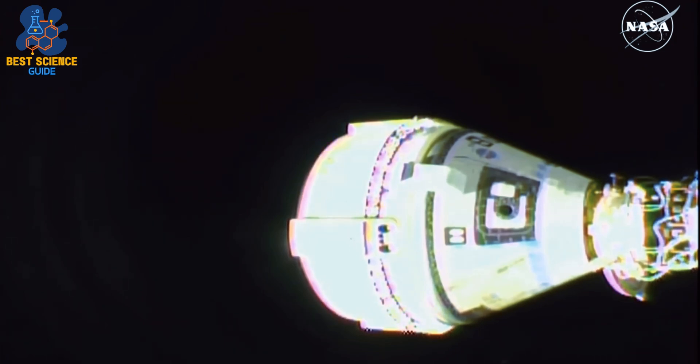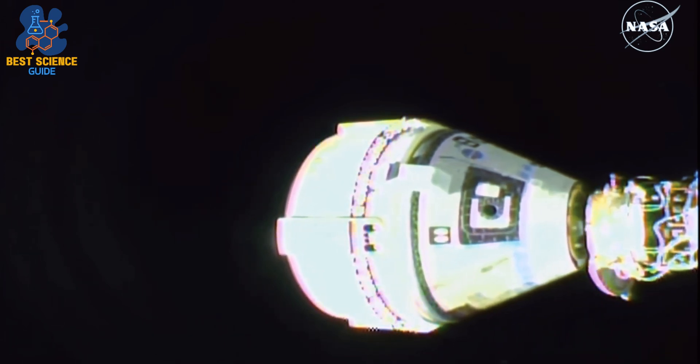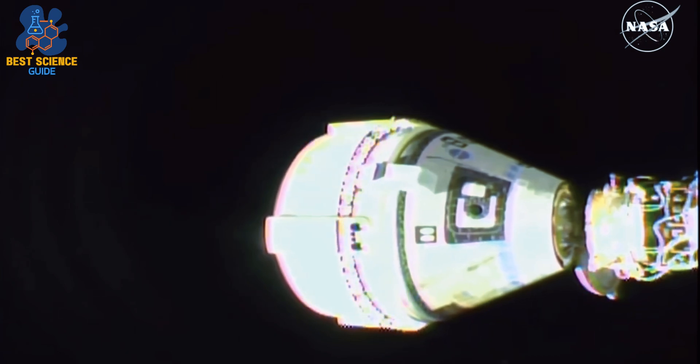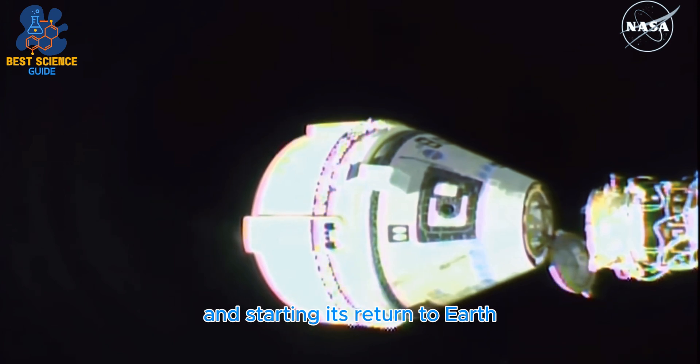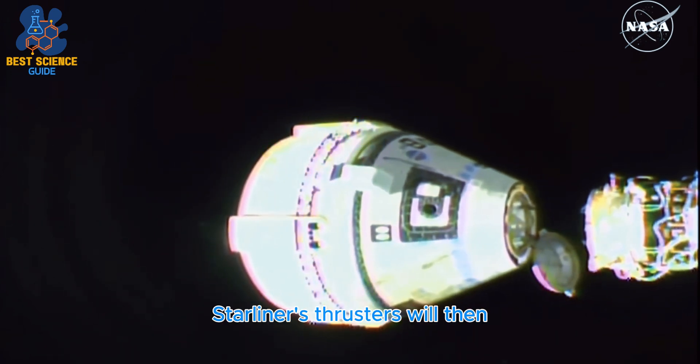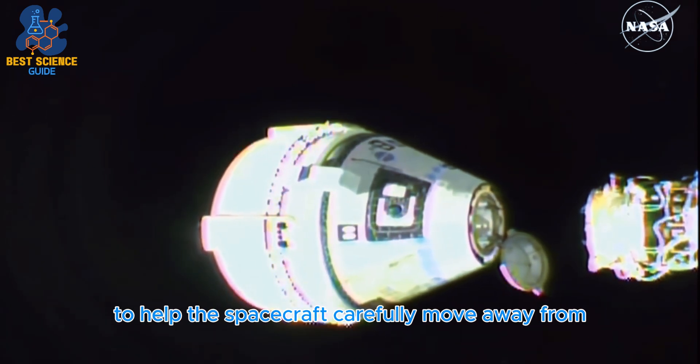30 seconds. Separation confirmed. Starliner is now backing away from station and starting its return to Earth. Starliner's thrusters will then complete two short firings to gradually increase the separation speed to help the spacecraft carefully move away from the orbiting lab.